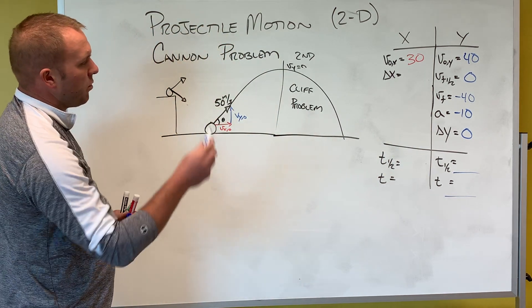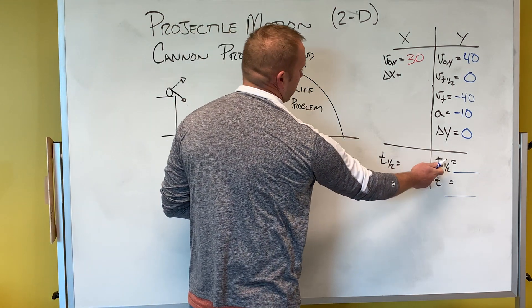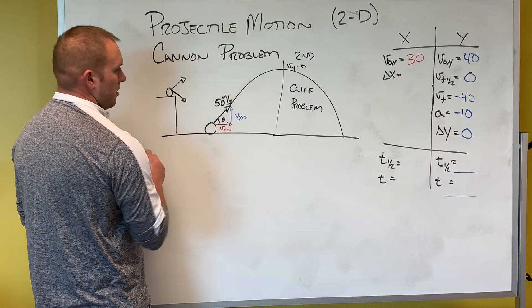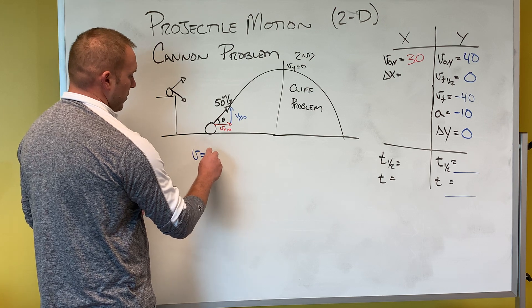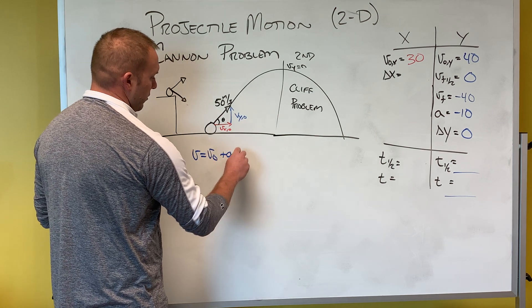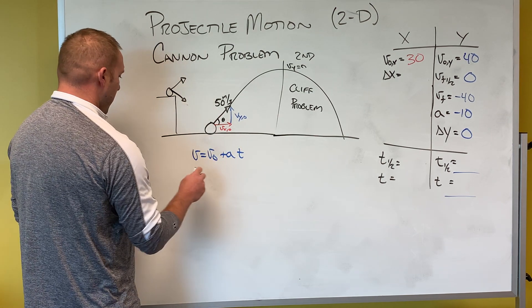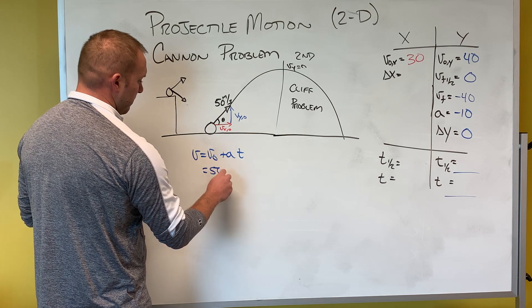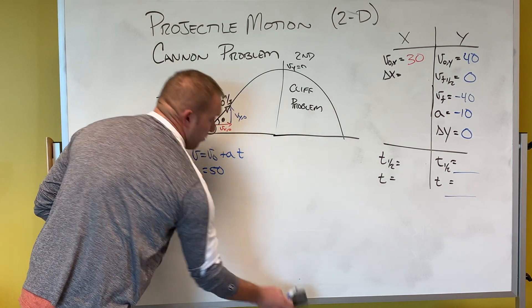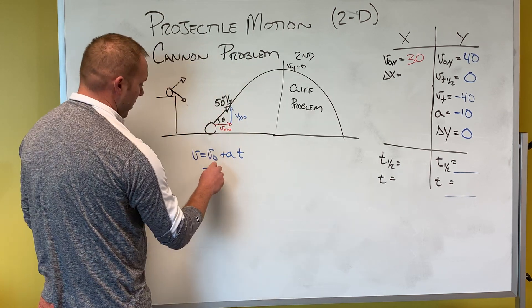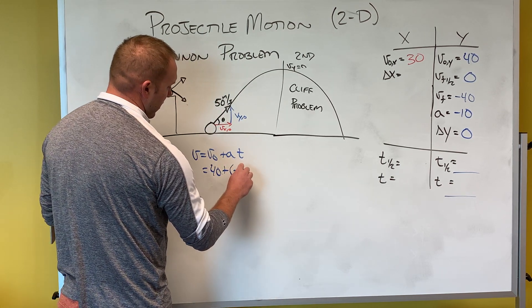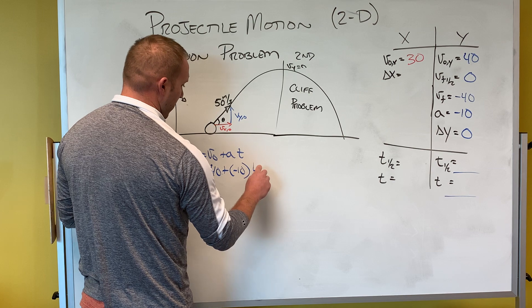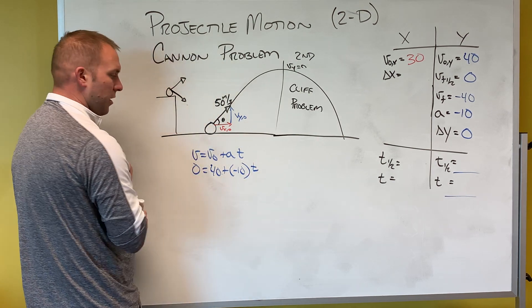Let's say we wanted to do time one half. We could use the idea that the final velocity equals the initial velocity plus acceleration times time. So I'm just dealing with the y motion. So that is 40 plus negative 10 times time. My final velocity is zero.